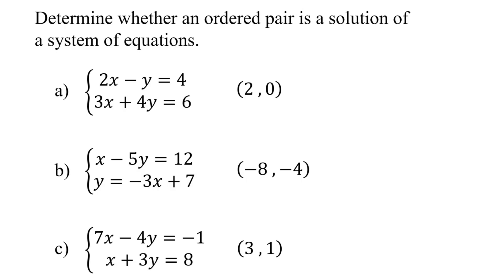In this lesson, we will discuss how to determine whether an ordered pair is a solution to a system of equations. To determine if an ordered pair is a solution to a system of two equations, we substitute the values of the variables into each equation. If the ordered pair makes both equations true, it is a solution to the system.